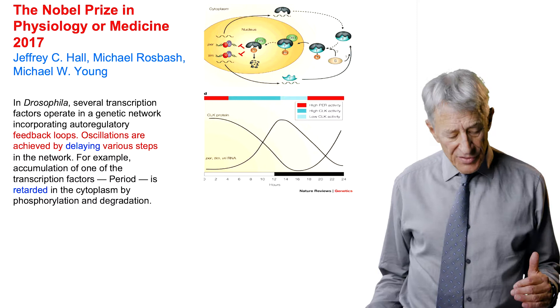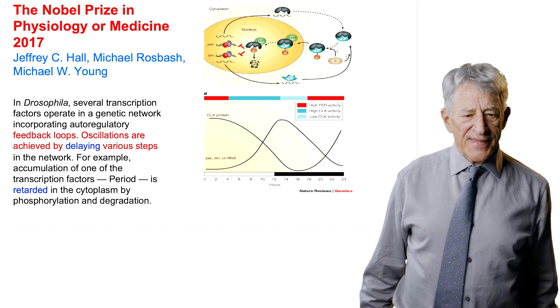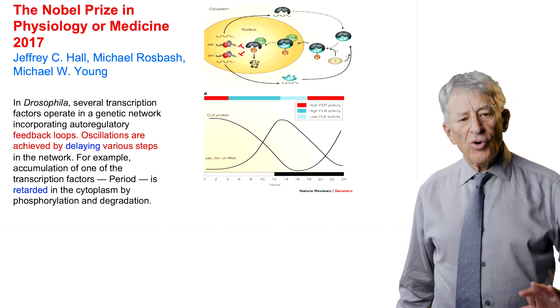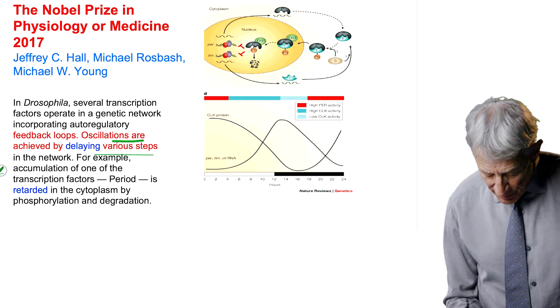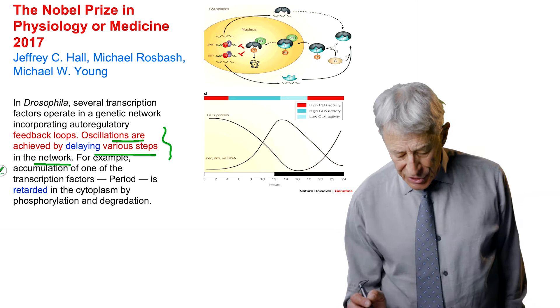In fact, negative feedback and oscillations were the subject of the Nobel Prize in 2017. Hall, Rosbash, and Young, these are their words. Notice that they say oscillations are achieved by delaying various steps in the network.